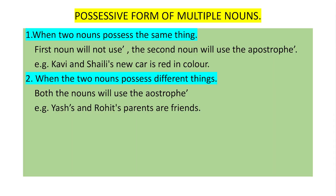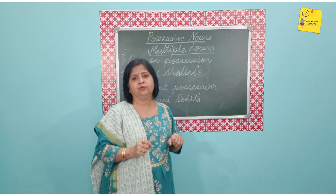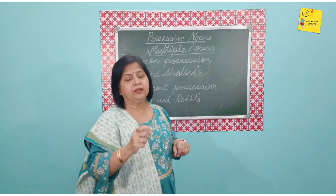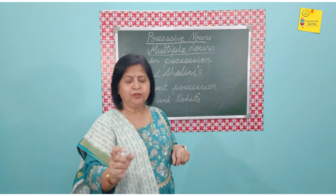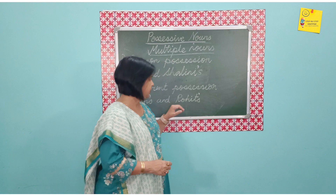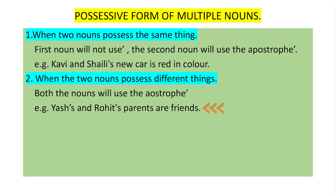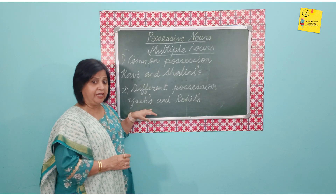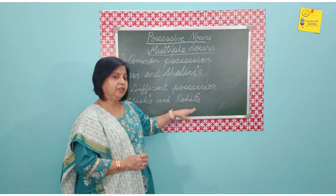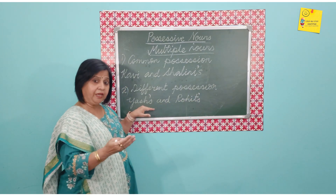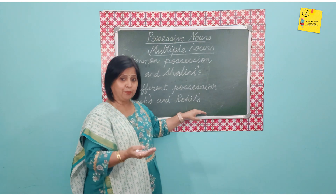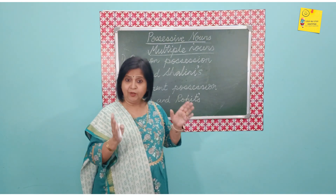When two nouns each own different things, both take an apostrophe S. For example, Yash's parents and Rohit's parents are friends — those are two different sets of parents, two different possessions. So Yash takes apostrophe S and Rohit also takes apostrophe S.